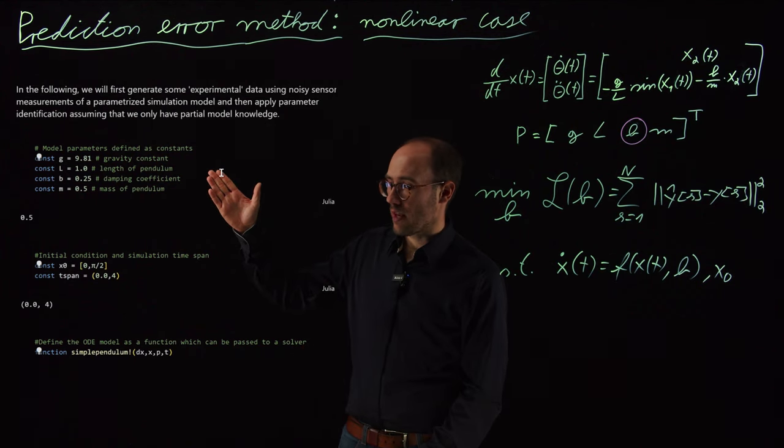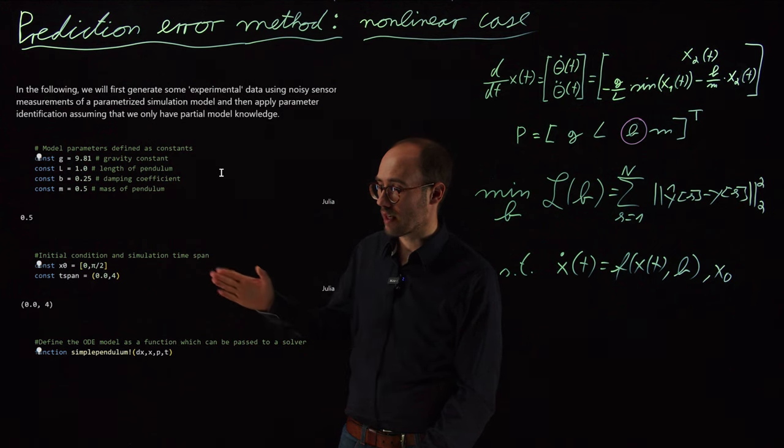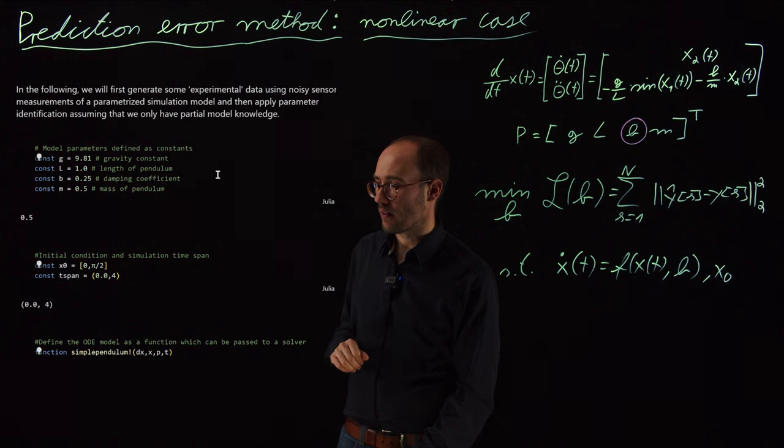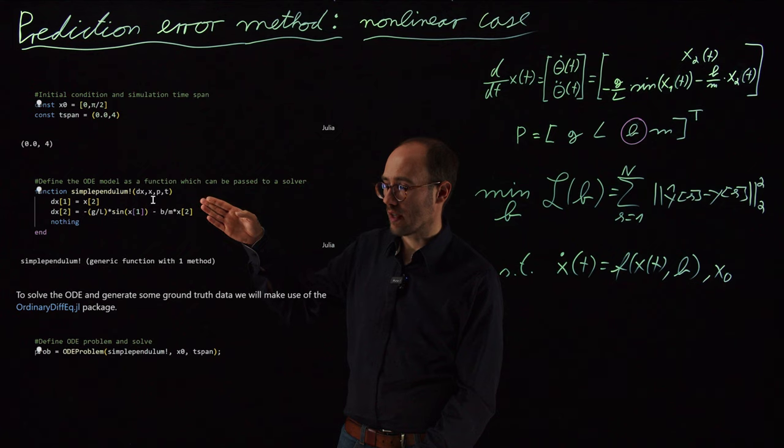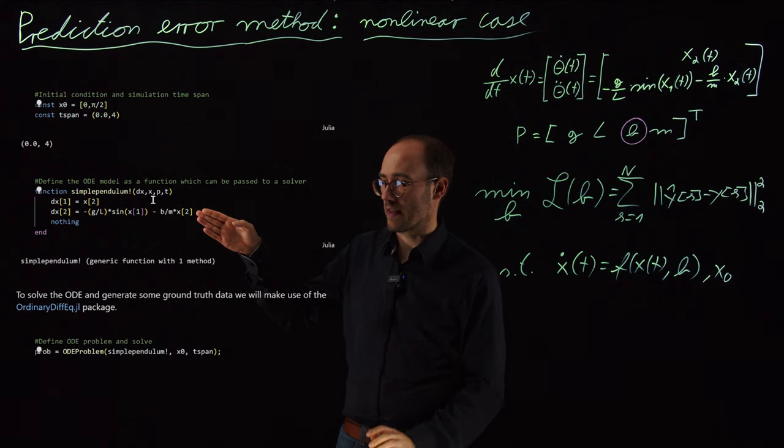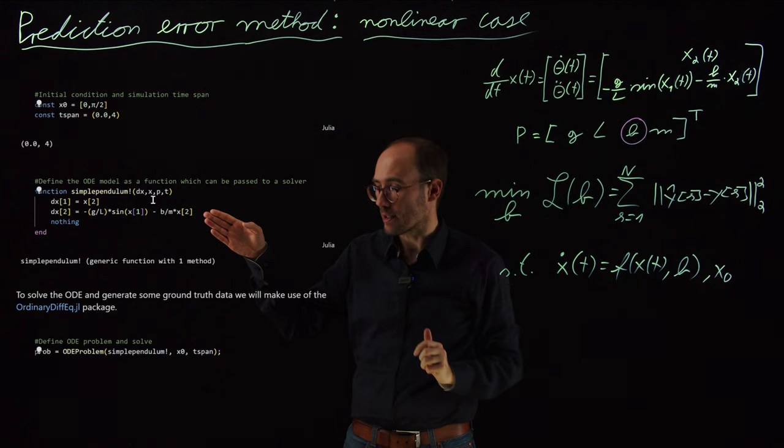In order to do that, we need some parameter values, which we have defined here at the very beginning. We also need to define our initial state and our time span. And then we are going to define our pendulum ODE, which is basically, as you can see here, pretty much the same equation as we have written here on the lightboard.